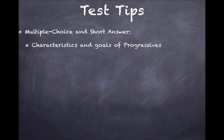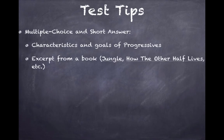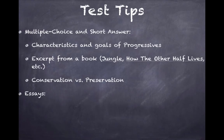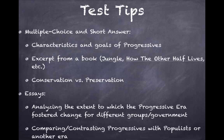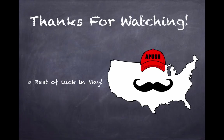Some test tips to finish up: for multiple choice and short answer, know the characteristics and goals of progressives. You may see an excerpt from a book — maybe 'The Jungle,' maybe 'How the Other Half Lives.' Know conservation versus preservation. For essays, analyze the extent to which the Progressive Era fostered change for different groups or the government — African Americans, women, or federal and state government levels. You can also see comparisons with the Populists or another era, perhaps the New Deal. Thank you very much for watching — best of luck on all your exams, especially the one in May. Have a good day.